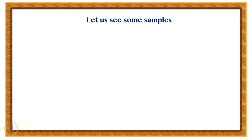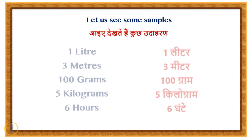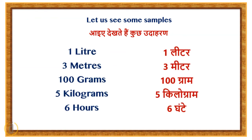Let us see some examples — Aaiye dekhte hai kuch udaharan. One litre — ek litre. Three meters — teen meter. Hundred grams — sau gram. Five kilograms — paanch kilogram. Six hours — chhe ghante.